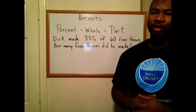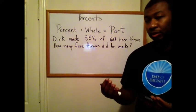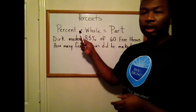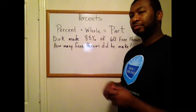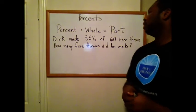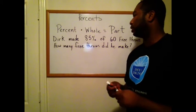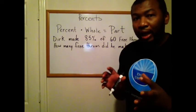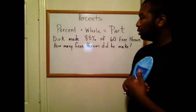Dirk made 85% of 60 free throws. Probably not in one game. If he made 85% of 60 free throws, how many free throws did he make? Percent times whole equals a part. 85% times the whole amount. Is it 60 the whole amount or is that part of the amount? Of the 60 free throws, that's his whole amount. So we showed how to work that out using the equation, and I'll work it out using the equation also. But a good way to help us visualize that we have a reasonable answer is use a percent estimation model.